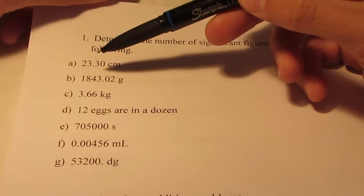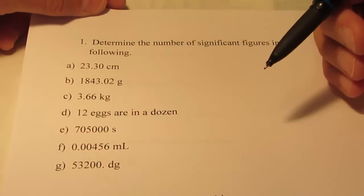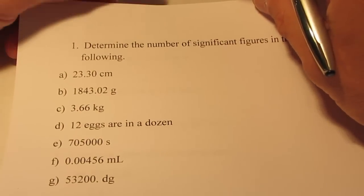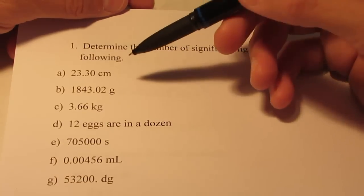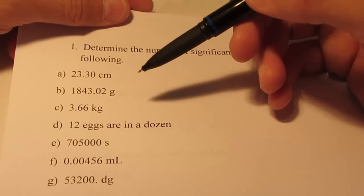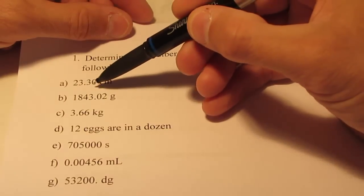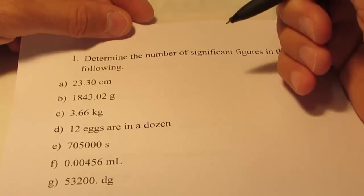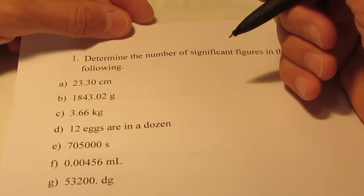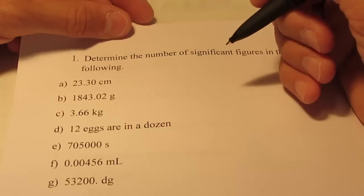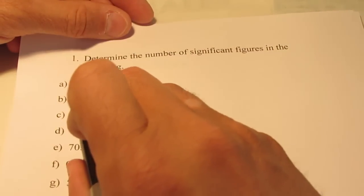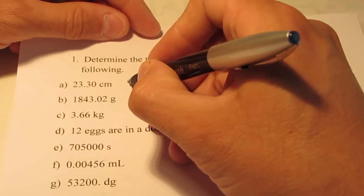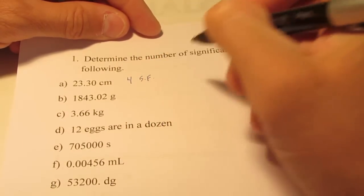Letter A, we have a measurement of 23.30 centimeters. Now remember, with measurements, we're really concerned about zeros, aren't we? Those are the only numbers that we question as to whether or not they are significant. So the question is, is that zero at the end of this number to the right of the decimal significant? And the answer is yes, it is. This measurement has one, two, three, and that last digit, that zero, is significant. So I would say that measurement has four sig figs.